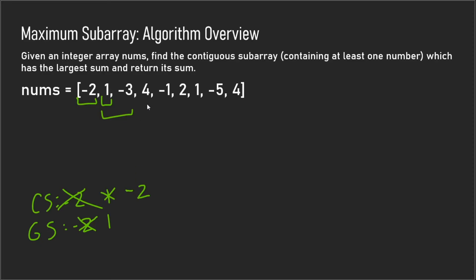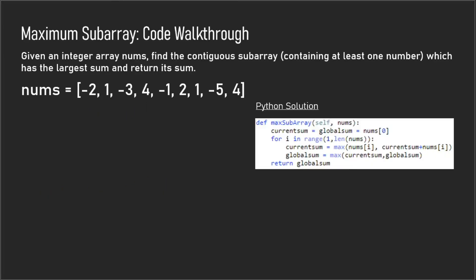Now we get to 4 and we check to see if adding 4 to the current sum is greater than just 4. In this case it's not, so our current subarray just becomes 4 and our current sum becomes 4, as well as our global sum. We continue on with this algorithm until we reach the end of the array and then we return the global sum.